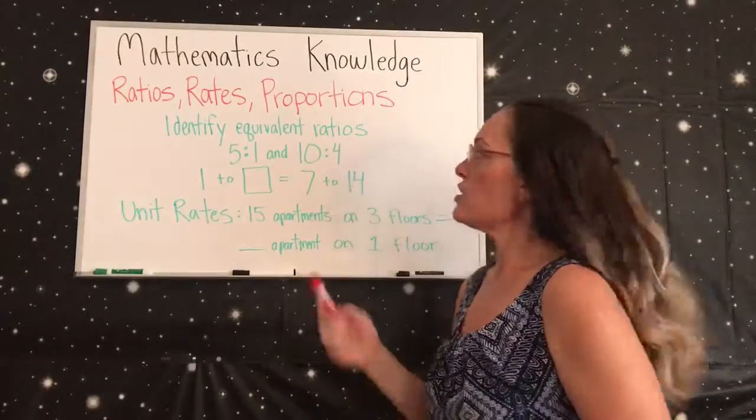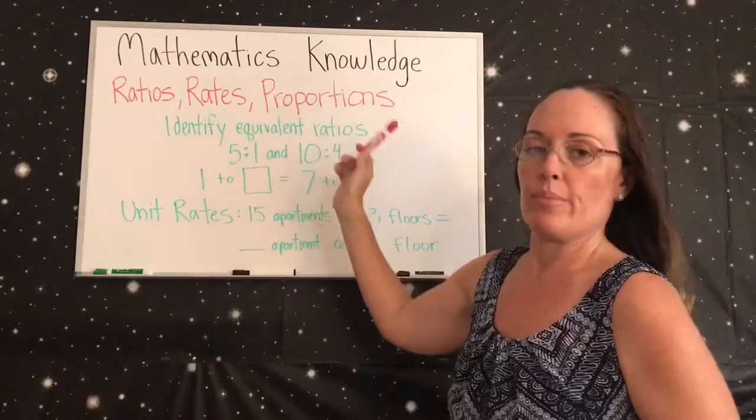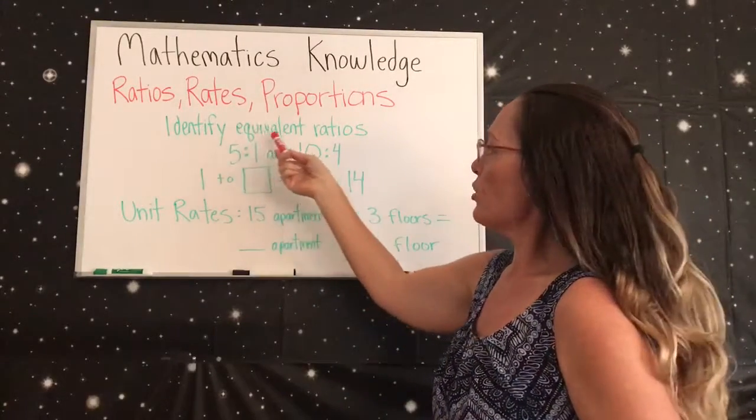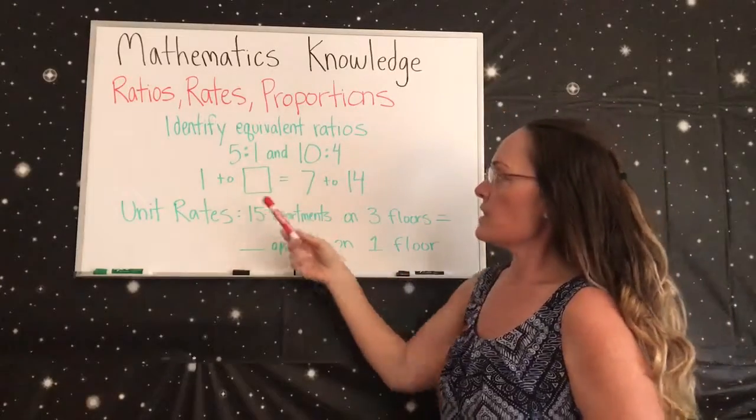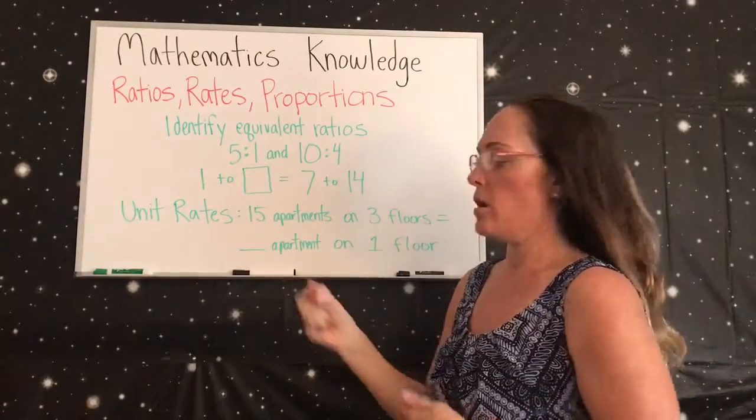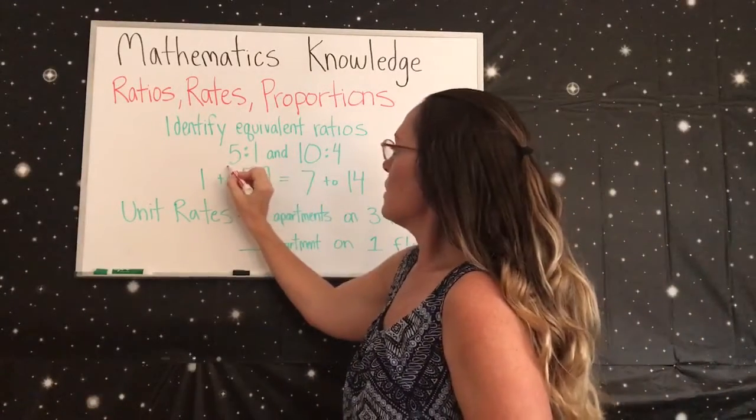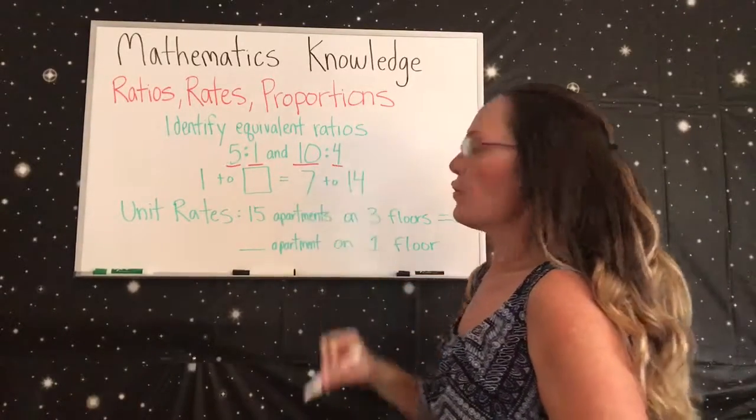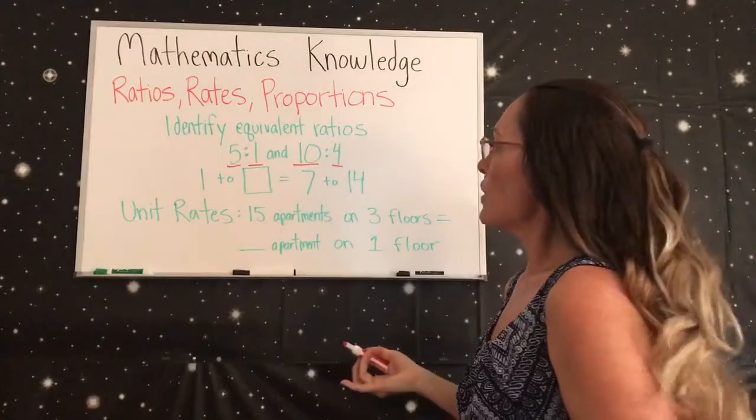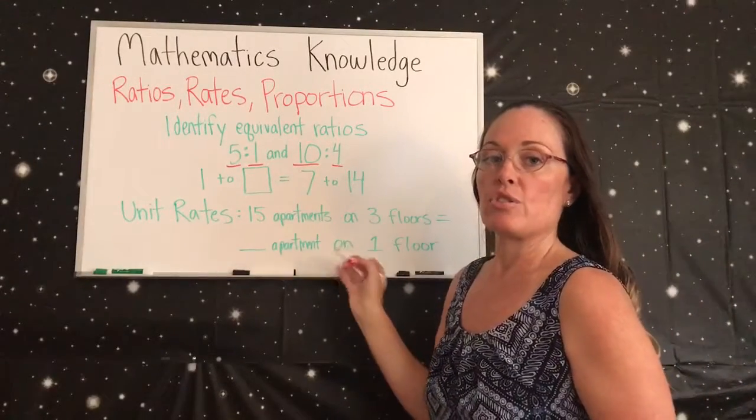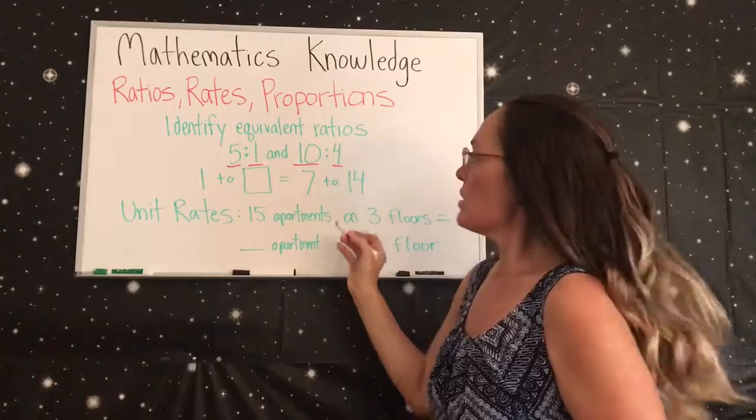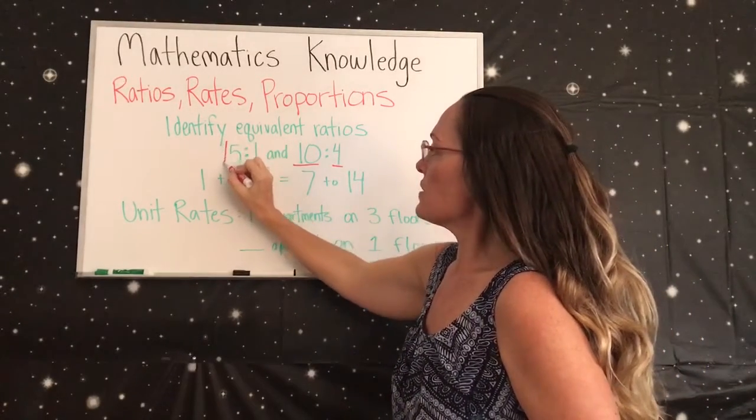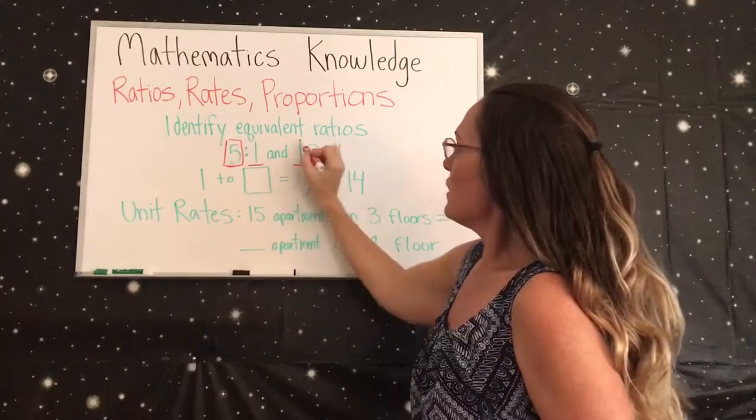Now we're going to discuss ratios, rates, and proportions. The first question is identifying equivalent ratios. In this example we have 5 to 1 and 10 to 4, so they just want to know are they equivalent or not. One way to find out is you have 5 on the left side here and you have a 10 on this side.